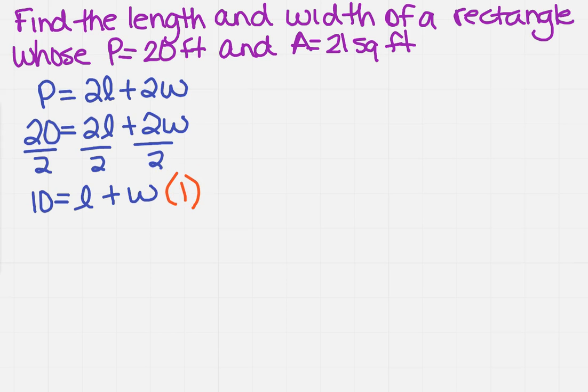The other equation mentioned is area. I know that area is length times width. It tells me that the area is 21, so 21 equals length times width. That's going to be equation two. So now we have a system of equations.